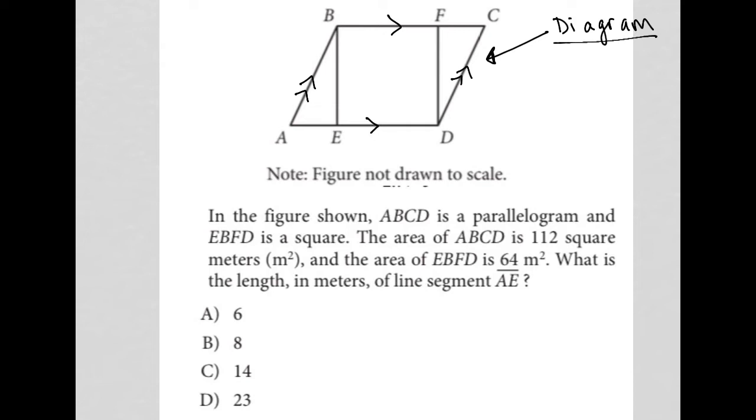And EBFD is a square. Okay, so that means that this side is congruent to that side, which is congruent to this side, because all four sides of a square are congruent and have 90 degree angles.